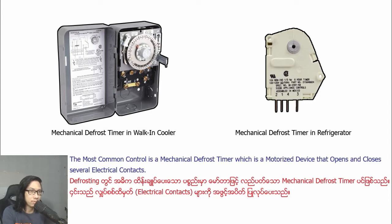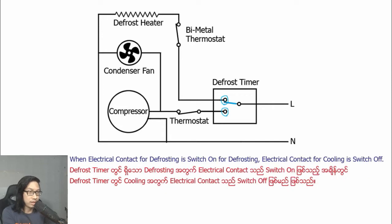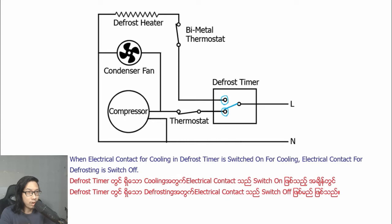The mechanical defrost timer is a motorized device that opens and closes electrical contacts. Each electrical contact in the defrost timer can be thought of as a switch — one contact for defrosting and one contact for cooling. The electrical contact for defrosting is switched on for defrosting.